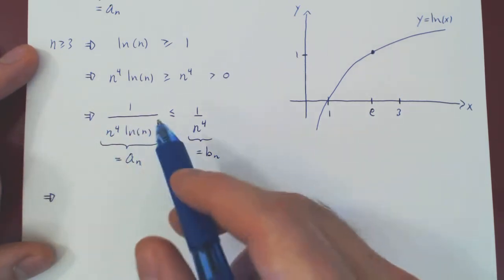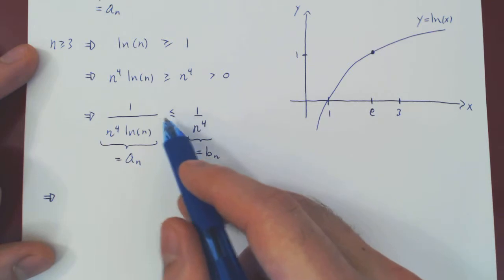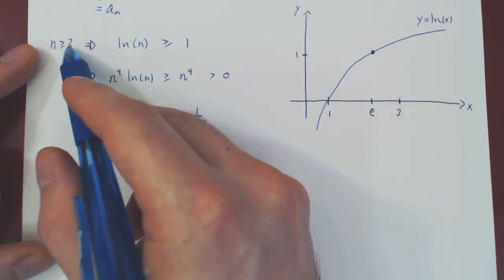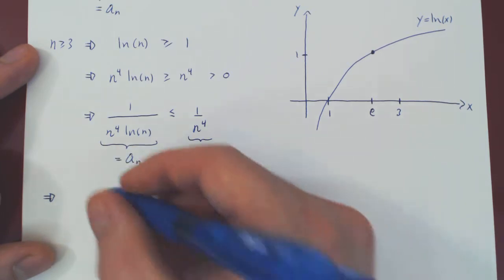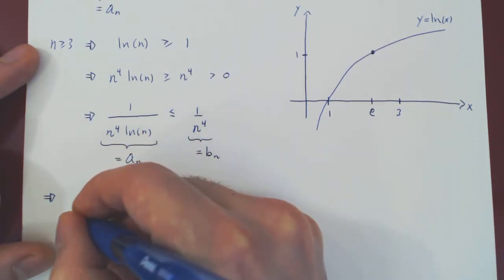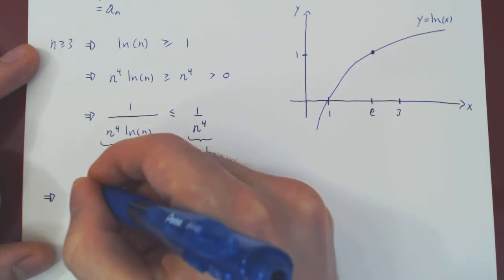So, keep in mind that this inequality is only valid when n is 3 or larger. Which means that, if we sum the smaller terms, from 3 to infinity,